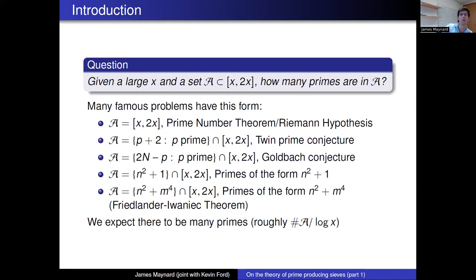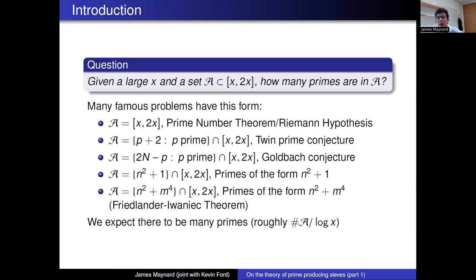Knowing the count of primes between x and 2x is addressed by the prime number theorem, but asking for refined asymptotics with good error terms leads to questions closely related to the Riemann hypothesis. Other famous examples: you could take the set of primes shifted by two, asking essentially how many twin primes are of size x. We believe there should be roughly x over (log x)^2 twin primes of size x, and showing there's at least one twin prime for any large x would be a natural way to prove the twin prime conjecture.